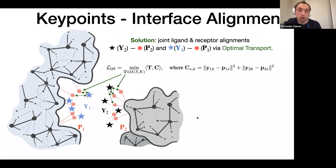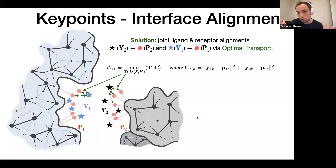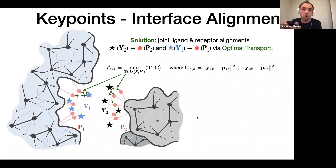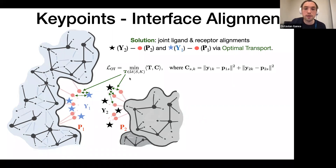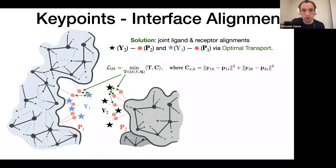Our solution uses the optimal transport framework, initially designed for aligning and quantifying horizontal distances between probability distributions. For discrete uniform distributions, it boils down to distances between sets of points. The optimal transport framework finds both the distance between sets in a metric space and jointly finds their alignment — encoded in a T matrix, typically a sparse doubly stochastic matrix with equal marginals.